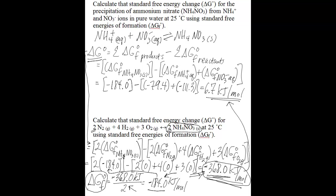The other thing that defines delta GF naught is that it's for the substance formed from the most stable forms of its constituent elements. The constituent elements are all the elements that make up a substance — in this case, nitrogen, hydrogen, and oxygen making up the ammonium nitrate. The most stable forms of those elements are nitrogen gas, hydrogen gas, and oxygen gas. You know this because when you look up the standard free energy of formation values for those three gases, you get values of zero, as you can see in the equation where you substituted in values.